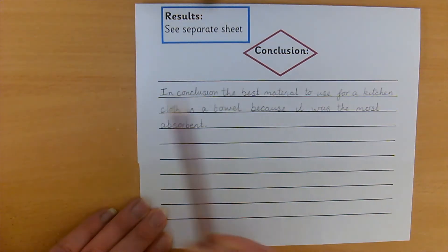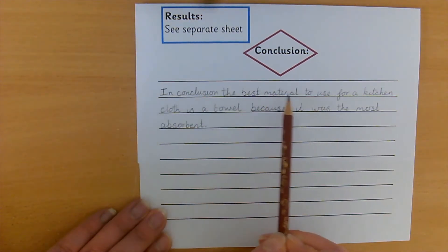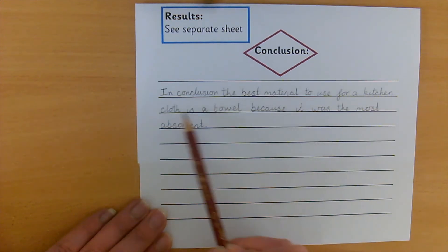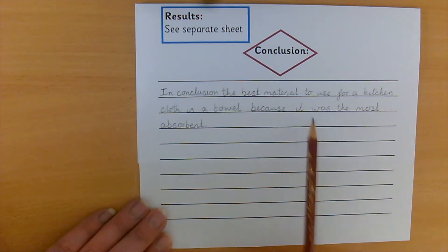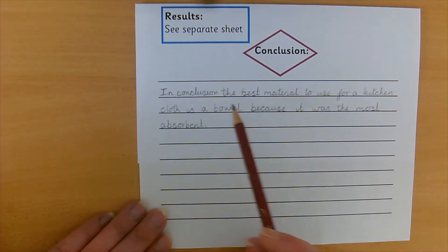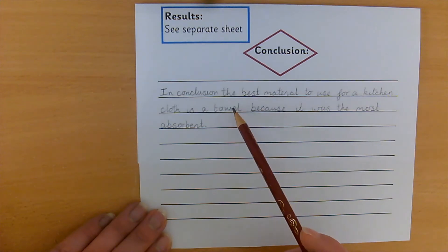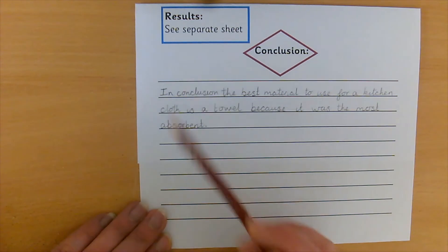Hello, welcome back. So I have written, in conclusion, the best material to use for a kitchen cloth is a towel because it was the most absorbent. You might have written because it soaked up the most water and that means exactly the same thing. Or you might have just written another reason. That is absolutely fine. As long as it makes sense and as long as it links to the investigation. You're not going to say that I think the best material is the towel because it's pink and pink is my favourite colour. That isn't answering the question of our investigation. So as long as it makes sense, your reason will be fine.